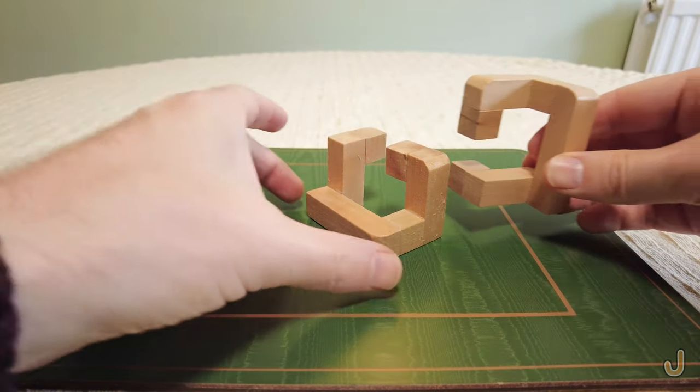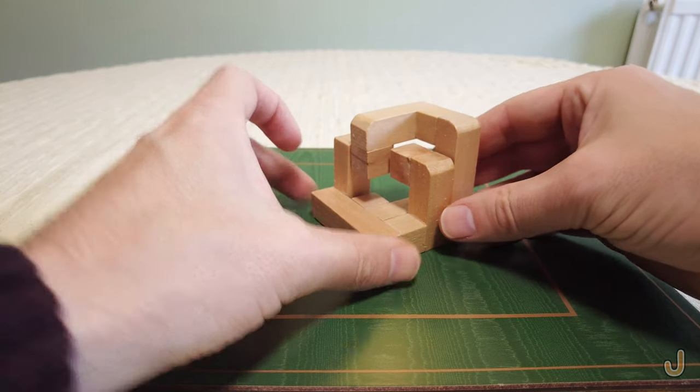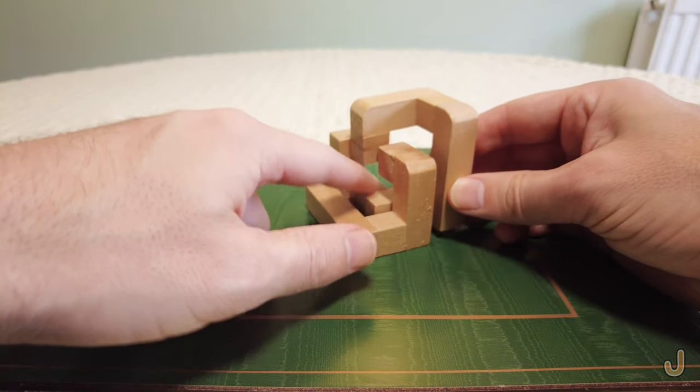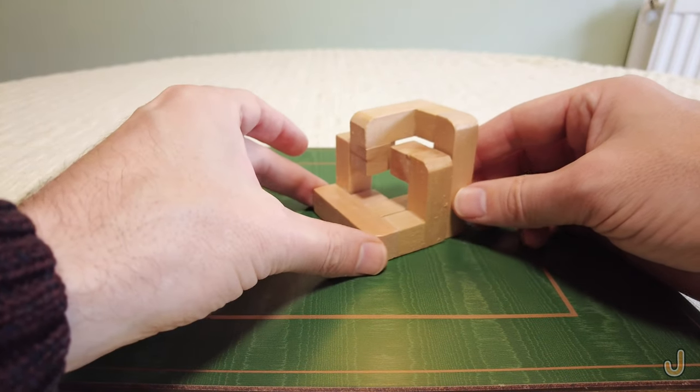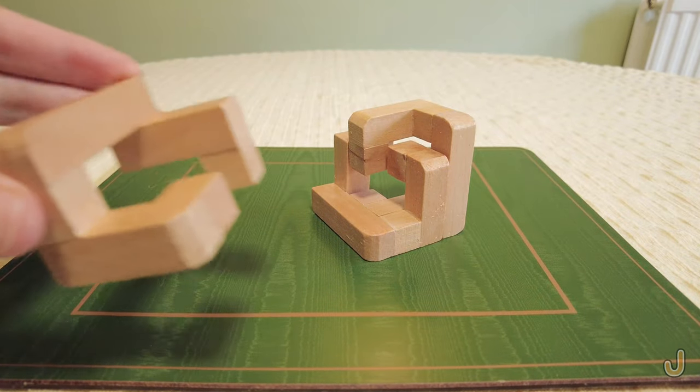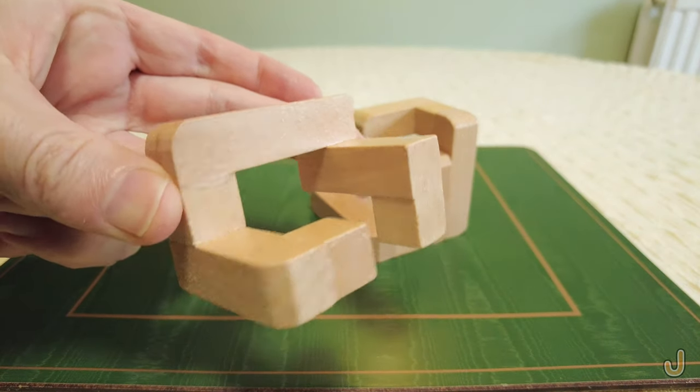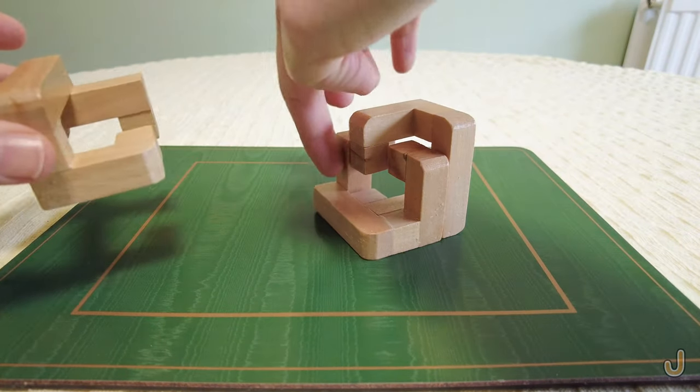That goes in this slot, so that length of two fits in that slot of two, like that. Then the third piece you hold like that, and this slot is going to go onto there, onto that pillar.